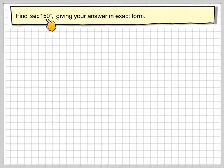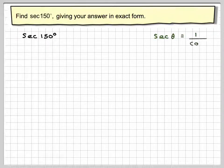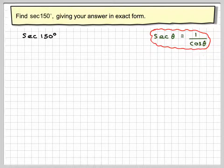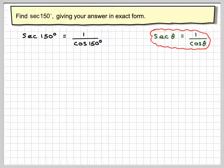Find sec of 150 degrees, giving your answer in exact form. So we've got sec of 150 degrees. We know that sec theta is 1 over cos. So this is the same as 1 over cos of 150.